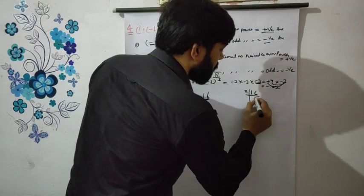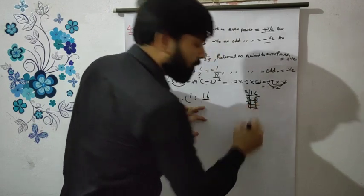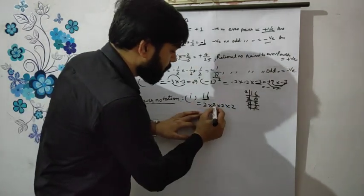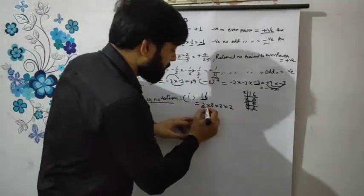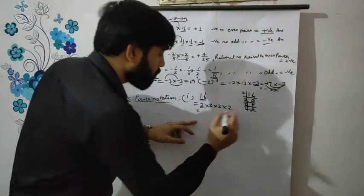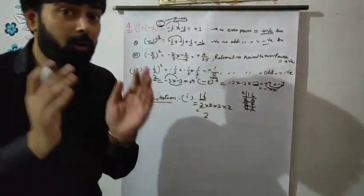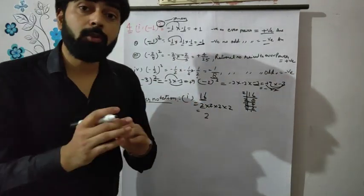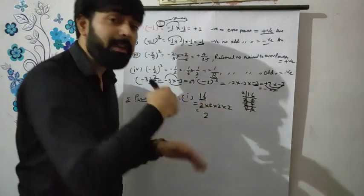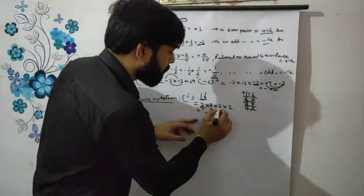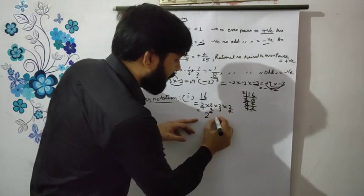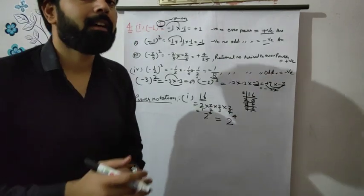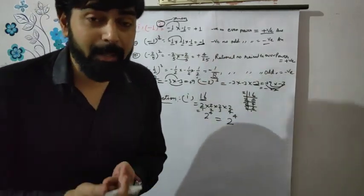LCM of 16: divide by 2 → 8, divide by 2 → 4, divide by 2 → 2, divide by 2 → 1. So 16 = 2×2×2×2, that is 2 multiplied 4 times. The repeated number is 2, so 2 will be the base. 2 is repeated 4 times, so 4 will be the power. Therefore 16 = 2 to the power 4.